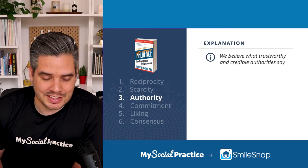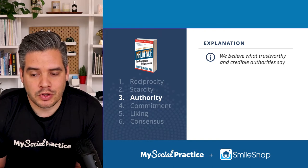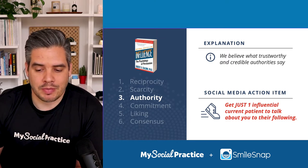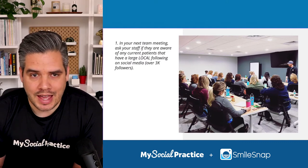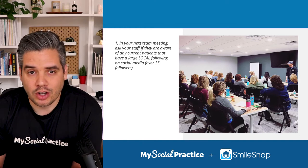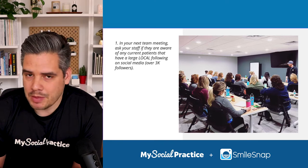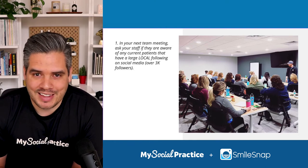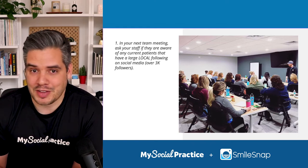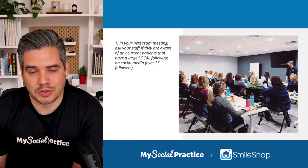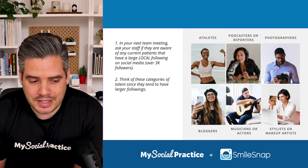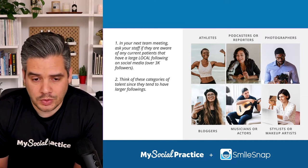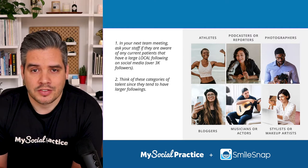The third principle is authority — we believe what trustworthy and credible authorities say. My action item is to get just one influential current patient to talk about you to their following. In your next team meeting, ask your staff if they're aware of any current patients with a large local social media following — I'd suggest over 3,000 followers, with mostly local followers. Categories of patients who tend to have larger followings include athletes, podcasters or reporters, photographers, bloggers, musicians or actors, and stylists or makeup artists.